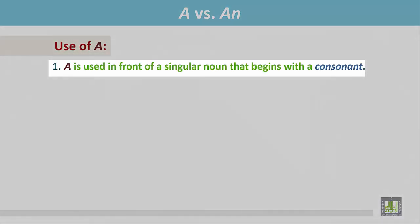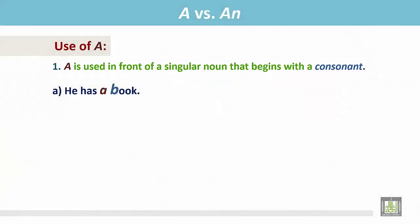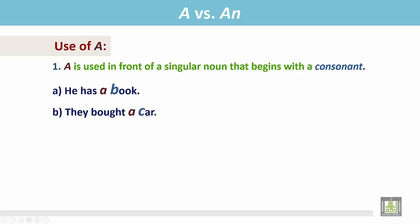A is used in front of a singular noun that begins with a consonant. If the word begins with a consonant, we place A before the word. For example, this word begins with the consonant B — book — and we place A before book. Another example: They bought a car. The word car begins with the consonant C, and we place A before car.